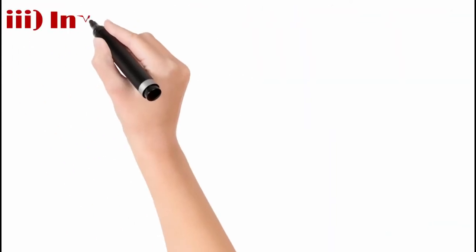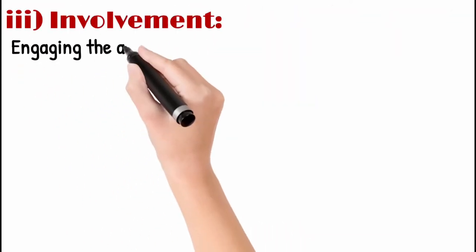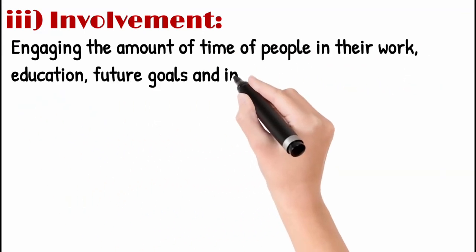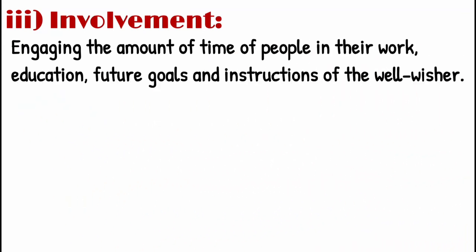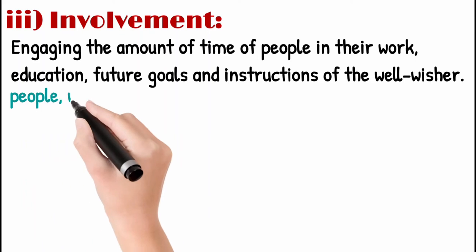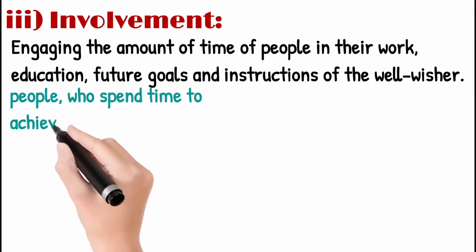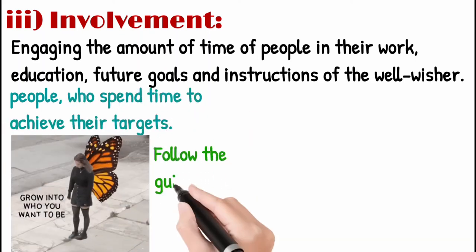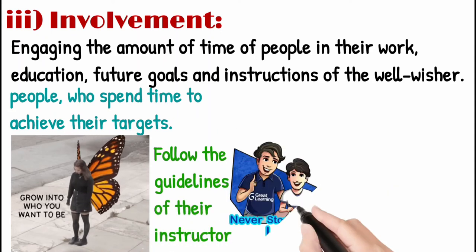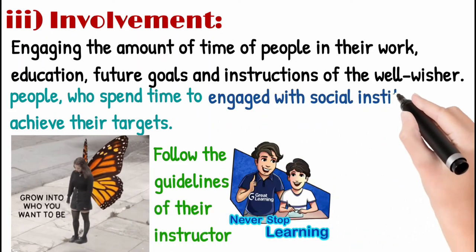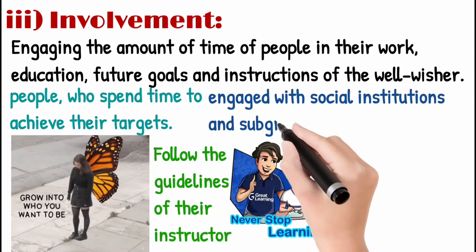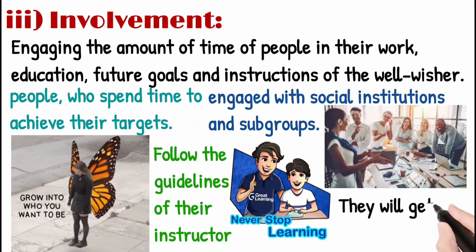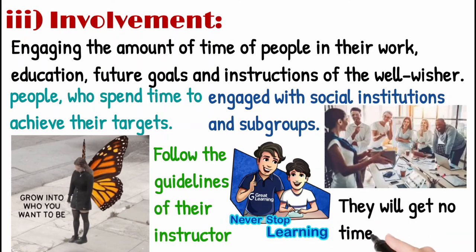Number three: Involvement — engaging the amount of time of people in their work, education, future goals, and instructions of well-wishers. People who spend all their time achieving their targets, follow their instructor's guidelines, and remain engaged with their social institutions and their group at all times — they simply do not get time to become involved in criminal activities.